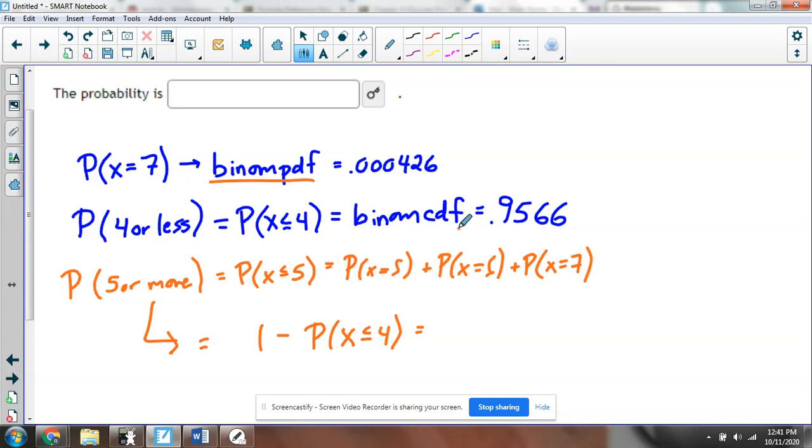The thing to remember is that binomial CDF in your calculator is always for less than or equal to a value. There is no function in your calculator for more than. So if you're doing more than, you either have to find each individual case and add them up, or subtract the less than situation from 1.